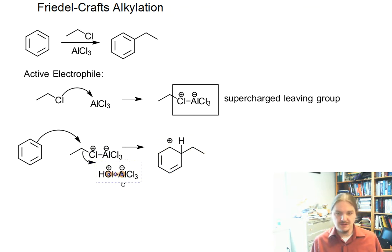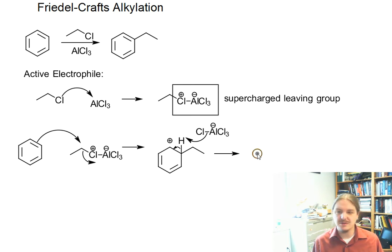And then likewise, we have this aluminum chloride tetrachloroaluminate which serves as the base, removes the proton, and generates, since our initial alkyl halide was chloroethane, we generate ethylbenzene, we generate hydrochloric acid, and we regenerate aluminum chloride.